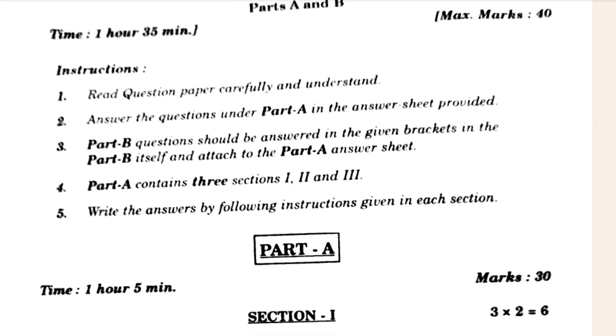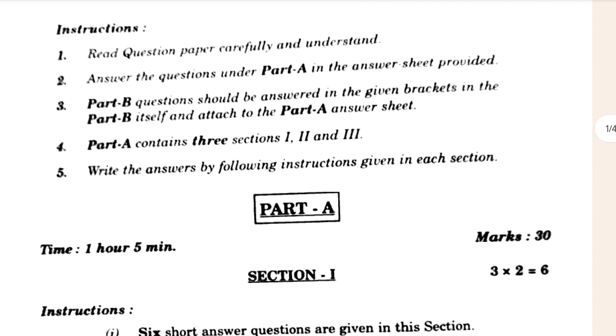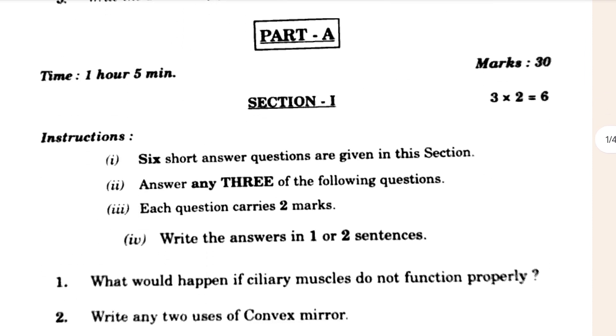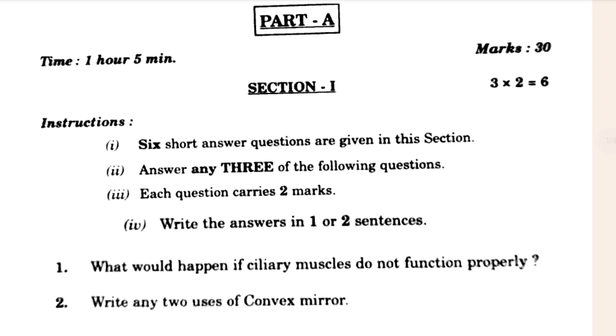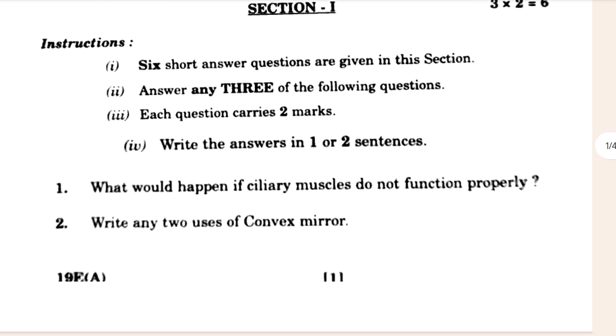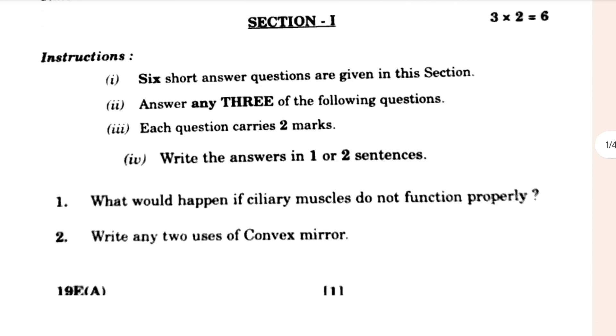This paper contains 40 marks and the bio paper contains 40 marks. So in science, both come - bio and physics - that contain 40, 40 marks. This paper is divided into Part A and Part B. Part A contains 30 marks and Part B contains 10 marks which is MCQ. You can see here, and bio is the same, it is totally like the same.